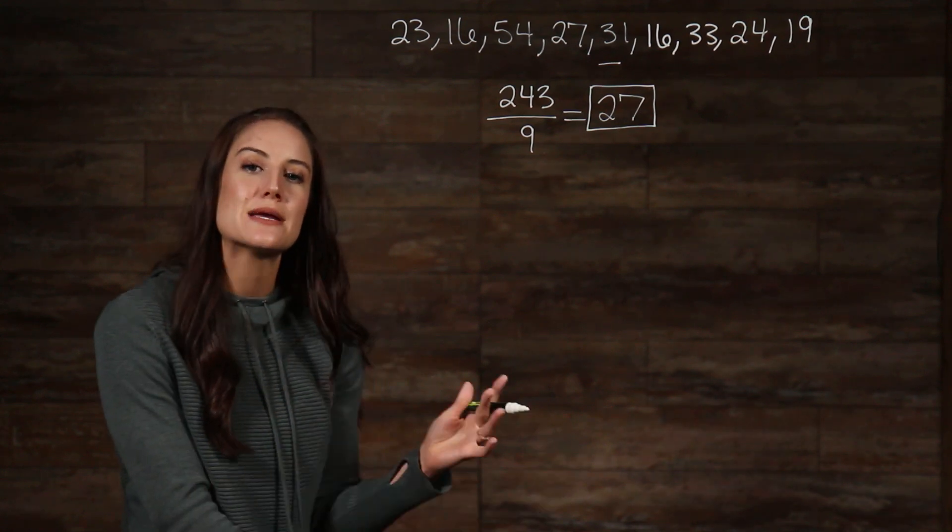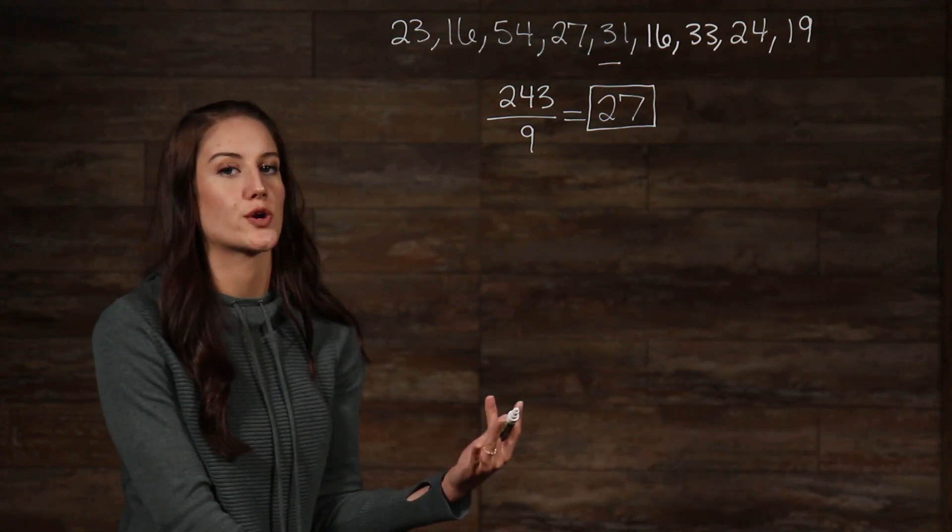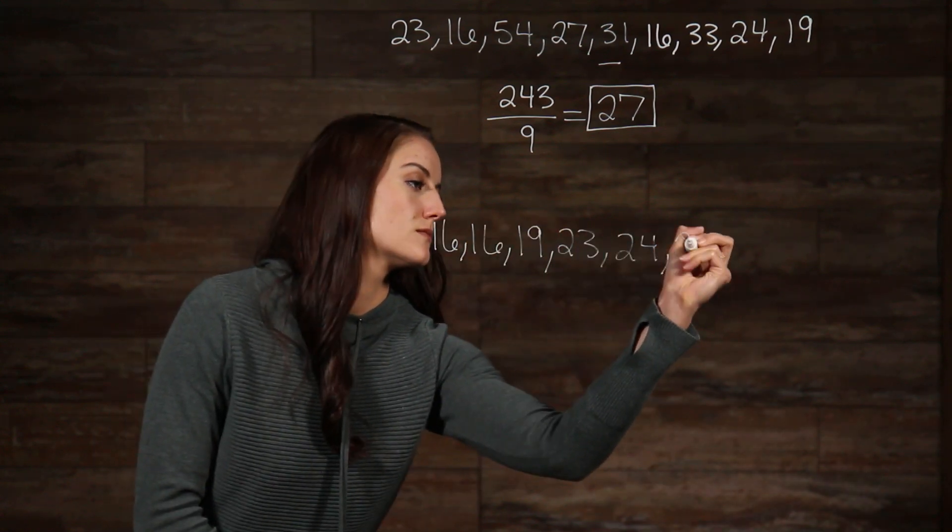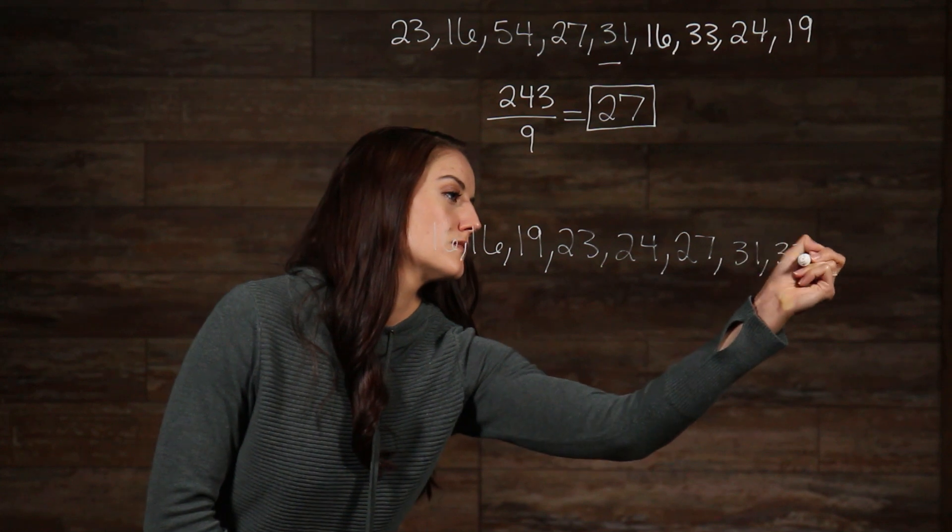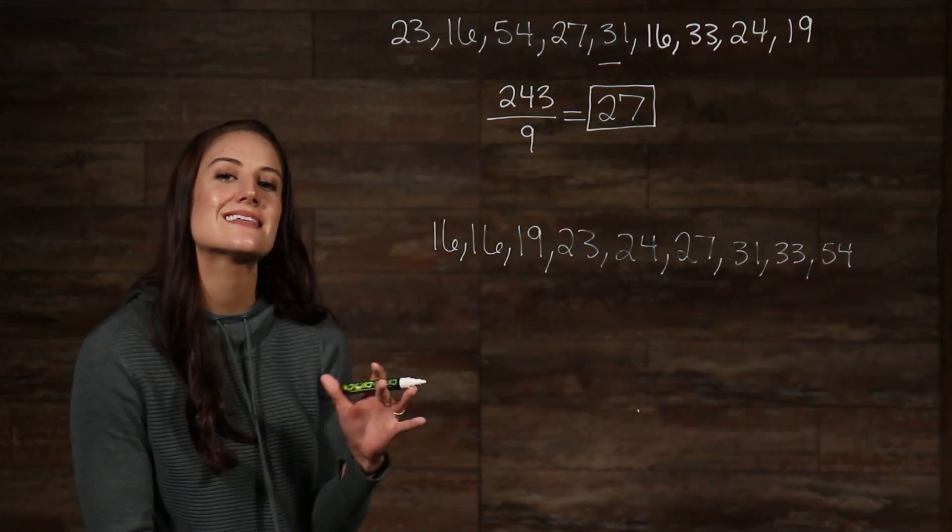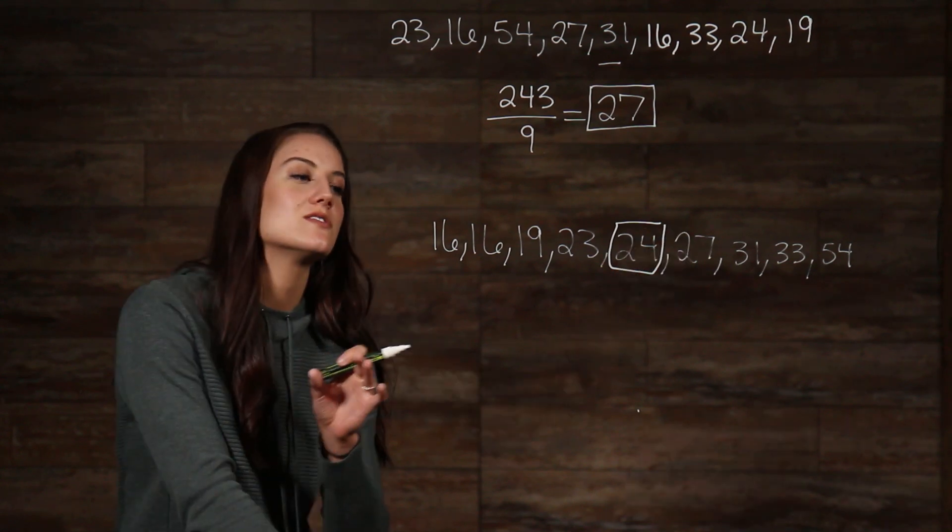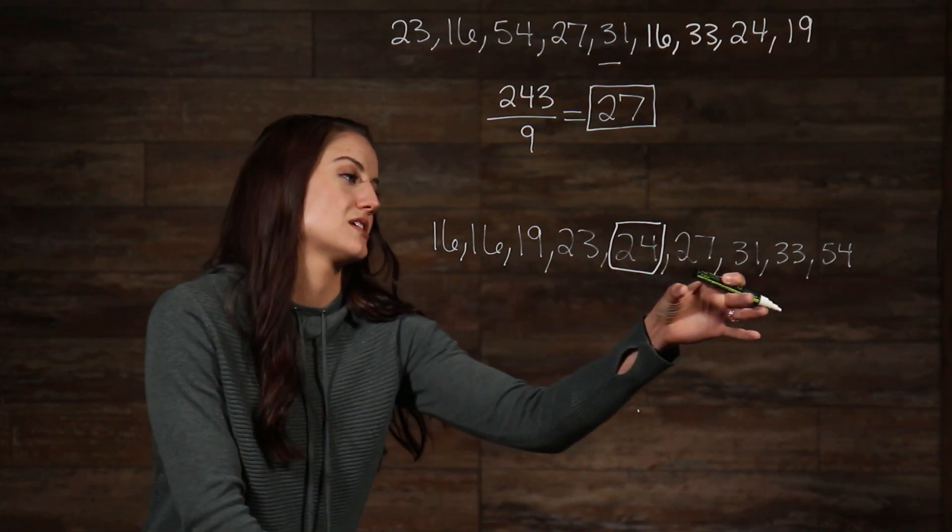So, using our same list, if we arrange it in ascending order, we can see that the number in the middle now is 24. And we know this because we have an equal amount of numbers on each side of 24.